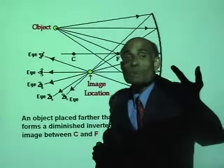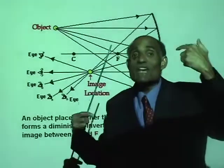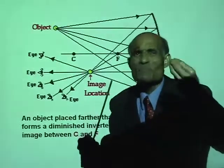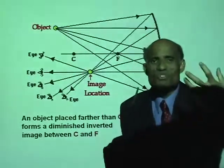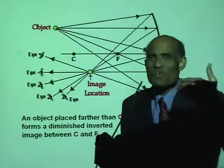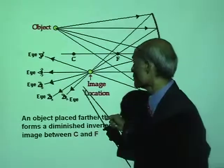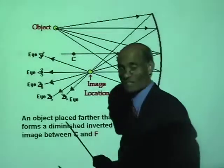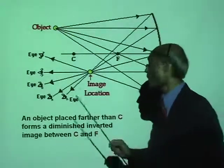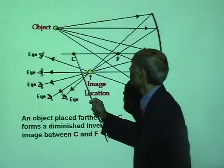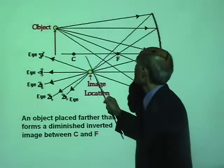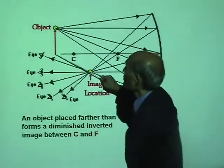The image in a plane mirror is an illusion — it is a virtual image. Virtual is something that is not real. Whereas this is a real image. The image is formed between the center of curvature and the principal focus.